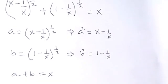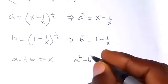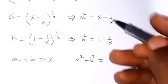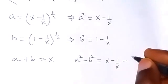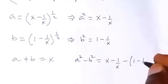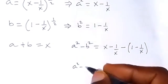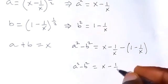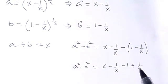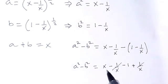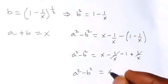Then let's subtract both sides. We have A squared minus B squared. On the right-hand side we have (x minus 1/x) minus (1 minus 1/x). Opening the bracket, we get x minus 1/x minus 1 plus 1/x. The minus 1/x and plus 1/x cancel out, and we are left with A squared minus B squared equals x minus 1.